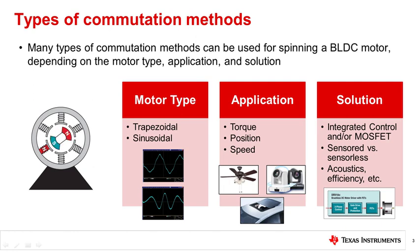Drivers and systems may or may not integrate control, MOSFETs, interface sensors, or other circuits. Commutation methods range from simple to complex, which may require extra hardware or software to achieve desired performance. Additionally, application requirements like acoustic performance or speed may dictate a certain commutation type.